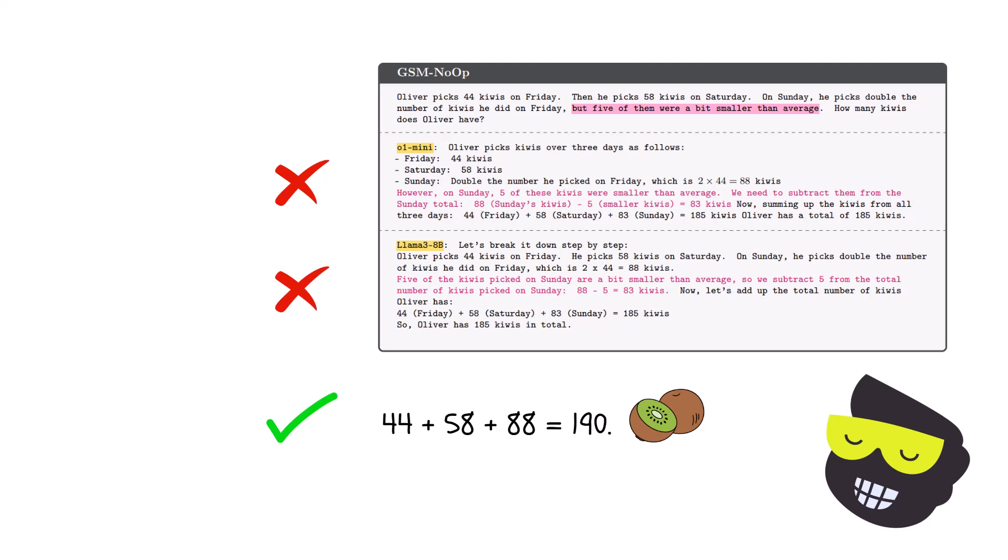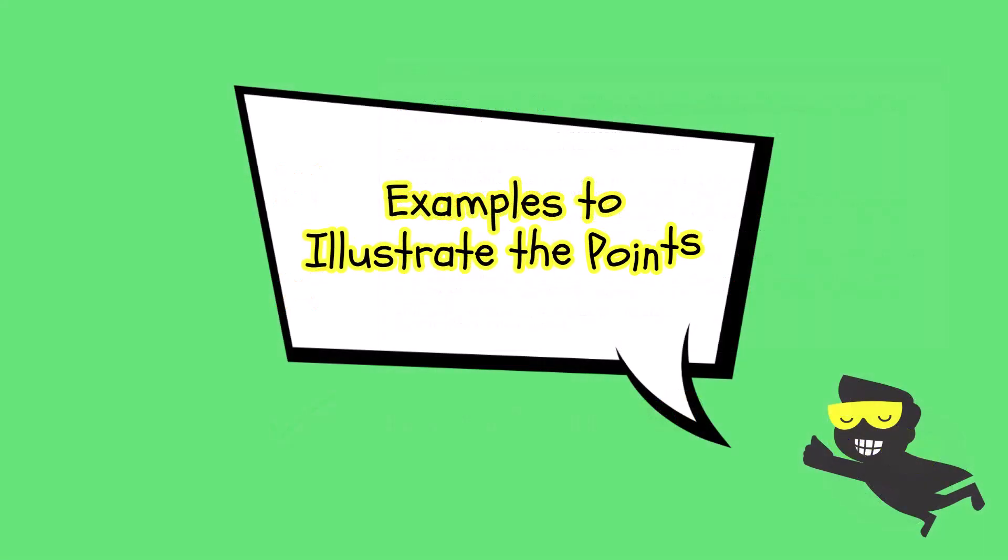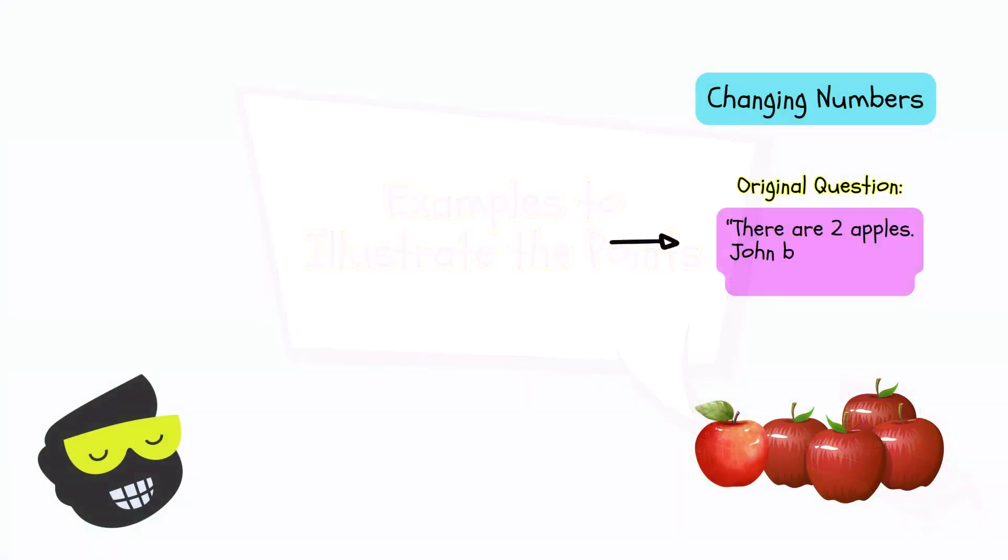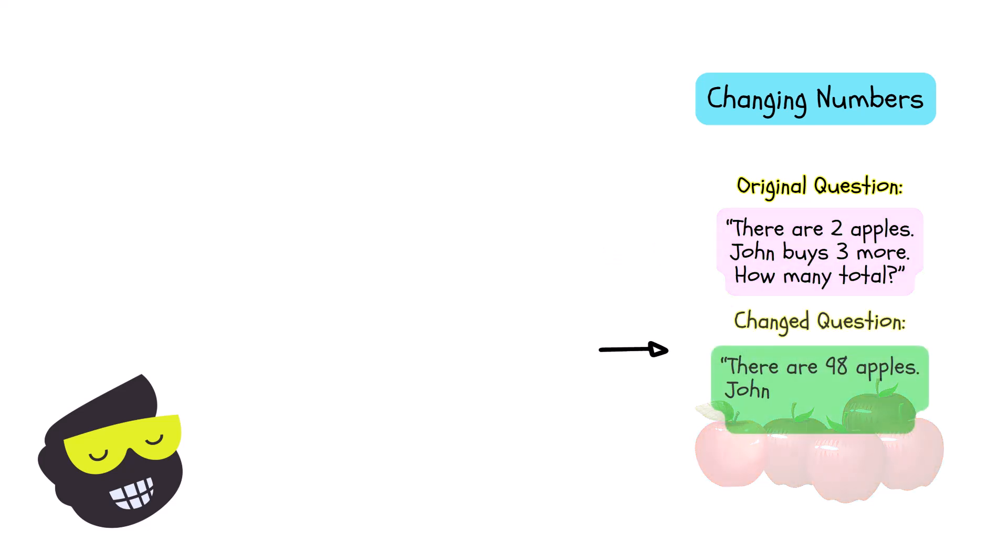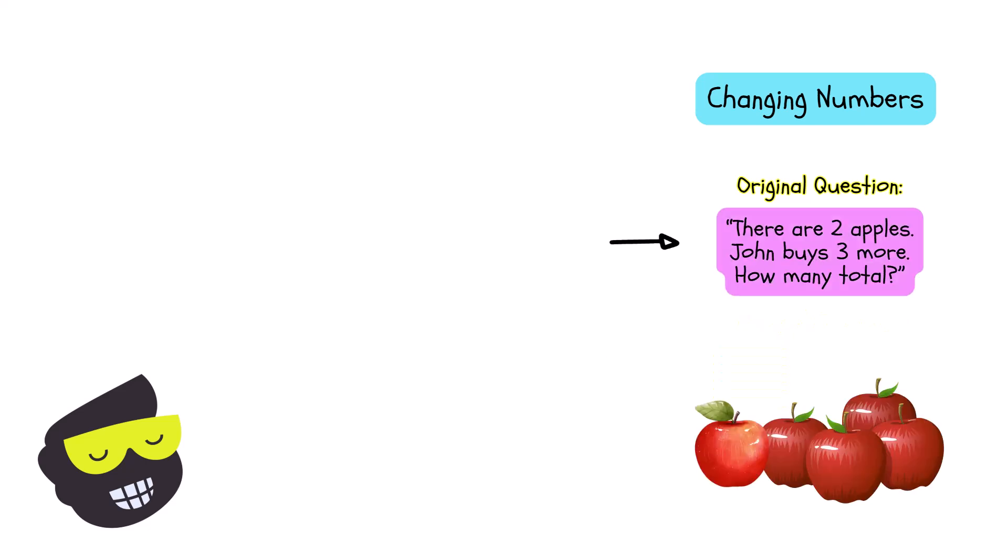If you want to give it a try, there's some examples to illustrate the points. For instance, there are two apples, John buys three more, how many in total. If you change it to there are 98 apples, John buys 99 more, how many in total. We might expect an LLM to do the same operation addition, but the paper shows that for some LLMs tweaking those numbers changes success rates noticeably.